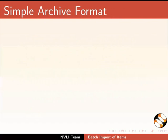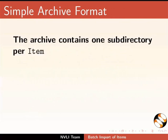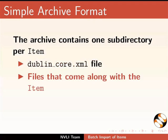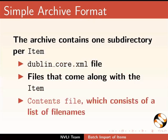Let us see the structure for simple archive format. The archive contains one subdirectory per item. Each subdirectory contains a DublinCore.xml file — the item's metadata — files that come along with the item, and the contents file which consists of a list of filenames.